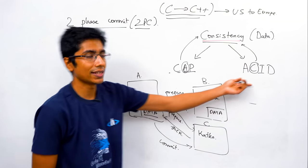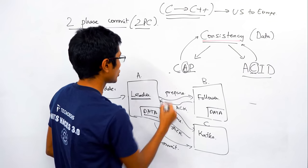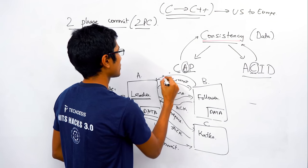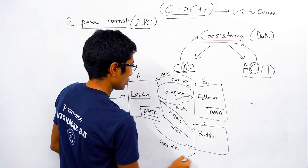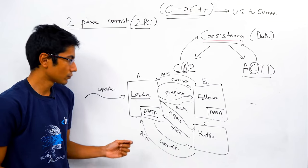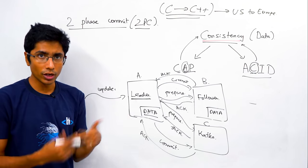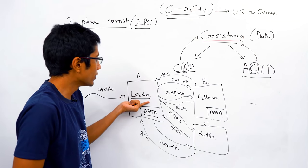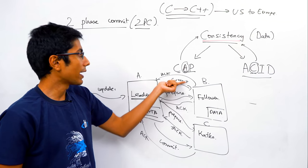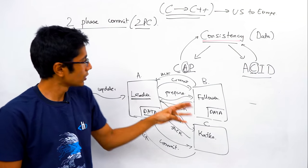When the leader gets all the acknowledgements, it asks the followers to commit. This effectively commits a transaction — that's the consistency bit. Assuming life is nice and they all give acknowledgements, the system works perfectly. This might be a complex update with multiple statements.